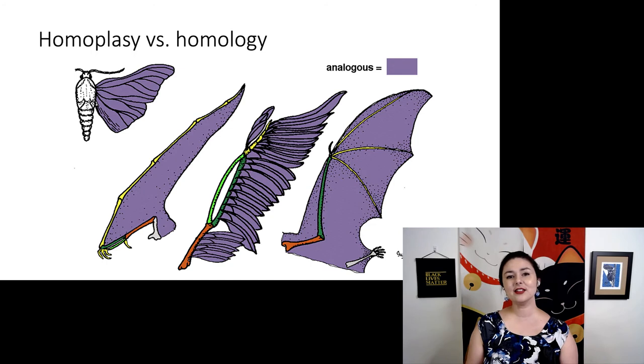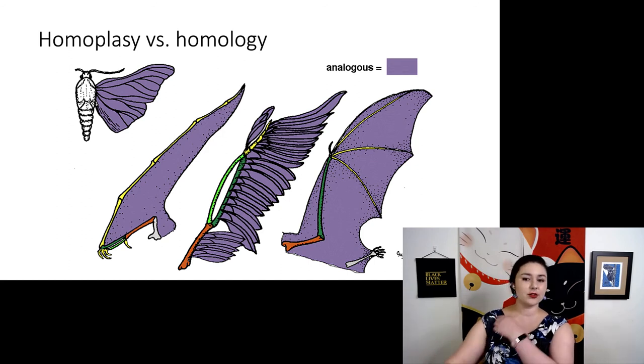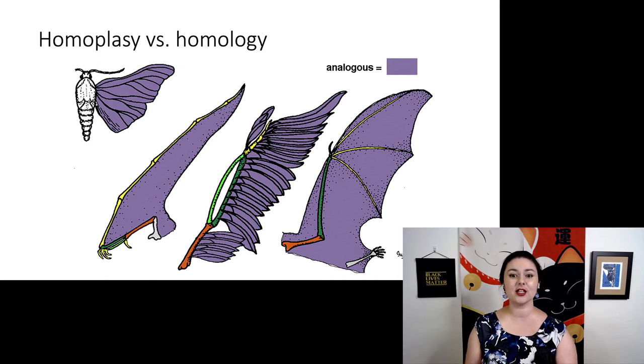It can get a little bit complicated, because depending on what you're talking about, it might be homoplasty, but it might be homology. So remember, those forearm bones are homologous between these three animals on the bottom. Here we have a pterosaur, a bird, and a bat. But the flight, all of their wings, that is analogous or homoplasty. So remember, always be careful about what you're talking about and whether you should be using homology or homoplasty.